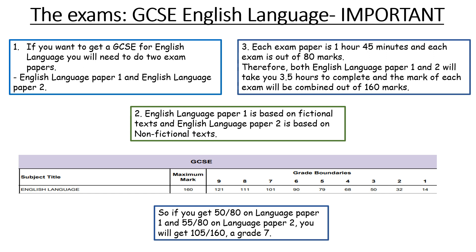So if you get 50 out of 80 on Paper 1 and 55 out of 80 on Paper 2, then overall you get 105 out of 160, which is a grade 7. In order to get a grade 9, you will need 60 on Paper 1 and 61 or above on Paper 2, or vice versa. 60 out of 80 is quite doable, and through these videos I will be showing you how to get that grade 9 on both papers.